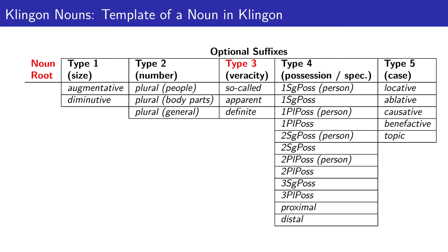If a type 3 suffix is present, it could occur immediately after the type 2 suffix if there is one, or immediately after the type 1 suffix if there is no type 2 suffix, or directly after the noun root if neither is present. Similarly, a type 4 suffix follows the highest-numbered suffix present, ultimately occurring directly after the noun root if no other suffixes precede it.